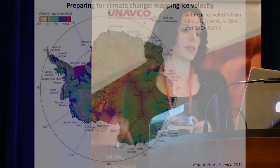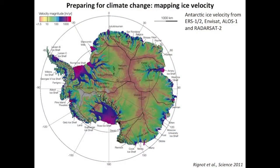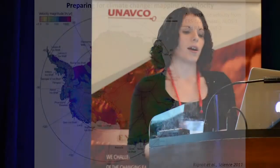We can also map how fast ice sheets are moving. This is an example of Antarctica, but a lot of work is also done on glaciers in Chile, for example, to try to better understand how our climate is changing — and InSAR can be used for that.